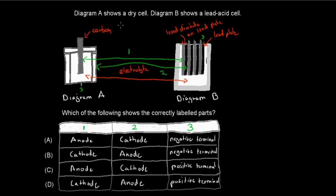The next question: diagram A shows a dry cell and diagram B shows a lead-acid cell. Three parts are labeled — 1, 2, and 3. Which of the following shows the correctly labeled parts? A: 1 is anode, 2 is cathode, 3 is negative terminal. B: 1 is cathode, 2 is anode, 3 is negative terminal. C: 1 is anode, 2 is cathode, 3 is positive terminal. D: 1 is cathode, 2 is anode, 3 is positive terminal. Pause the video.